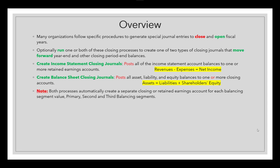Both processes automatically create a separate closing or retained earning account for each balancing segment value — either primary, second, or third balancing segment. In Fusion, unlike eBusiness, we have up to three balancing segments: primary, second, and third. If you enable two or three, the system will automatically create a separate closing account for each of those balancing segments.